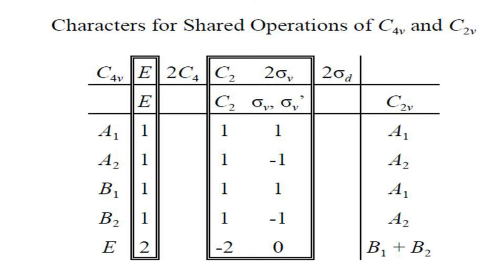In the previous slide, common operations are blocked and their characters are represented. Surprisingly, these common operations have the same character in the subgroup as well as the main group — characters in C4v and C2v are the same. One change to notice: in C4v all vertical planes were in one class, while in C2v the two vertical planes are separate classes. The reason involves Abelian group symmetry transformations, but the characters for all vertical planes are the same.